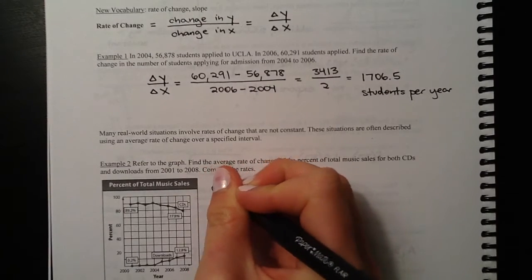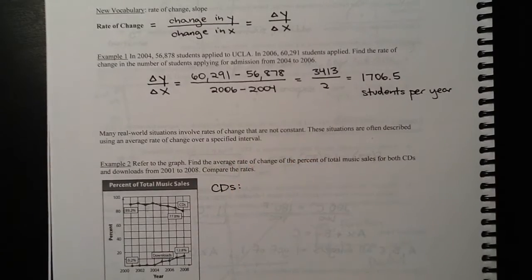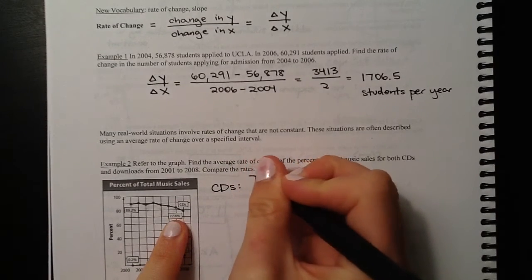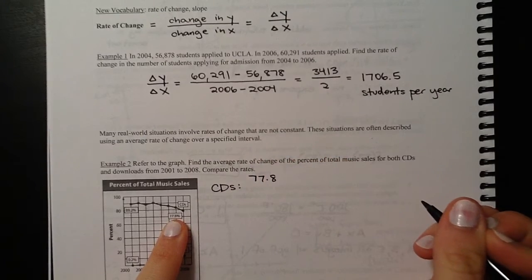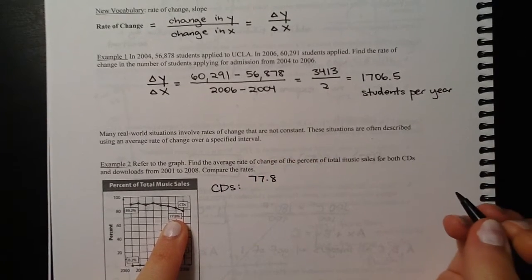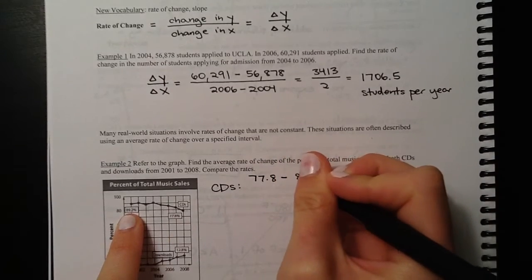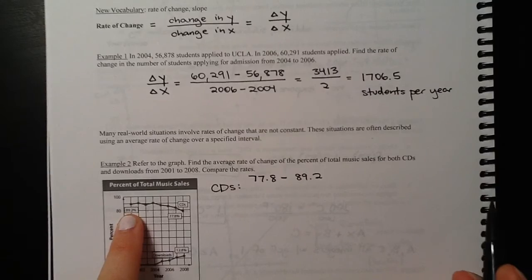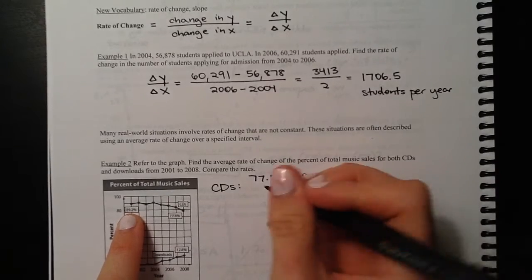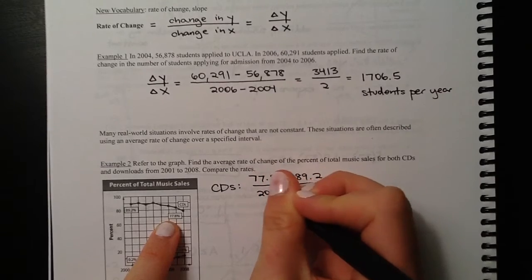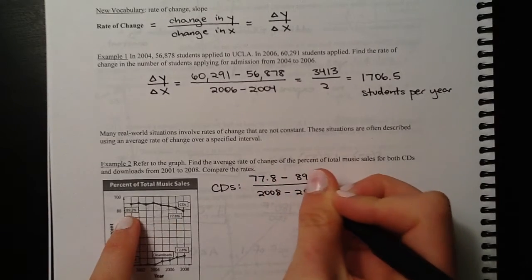So you can see in 2008, 77.8% of music sales were via CDs, and then minus 89.2. So since this is smaller than this, your rate of change is going to be negative, which makes sense because it's decreasing. And then divided by the year here, 2008, minus the year here, 2001.